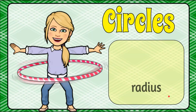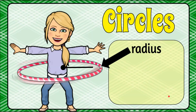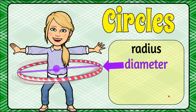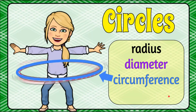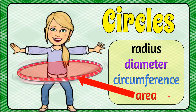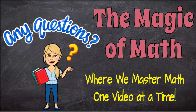And there you have it — the radius of a circle, the diameter of a circle, the circumference of a circle, and the area of a circle. Thank you for joining me today at The Magic of Math, where we continue to master math one video at a time. I hope you'll come back soon and have a great day.